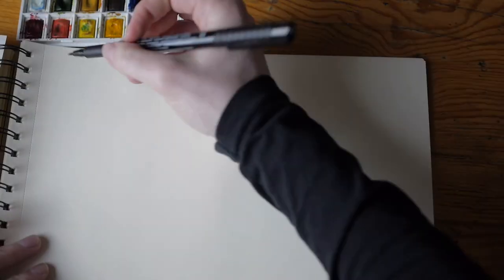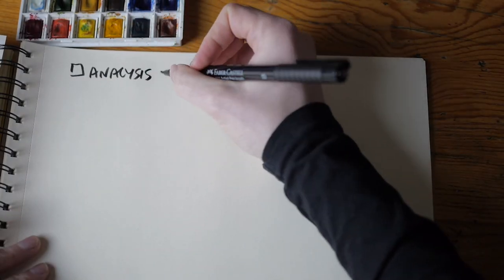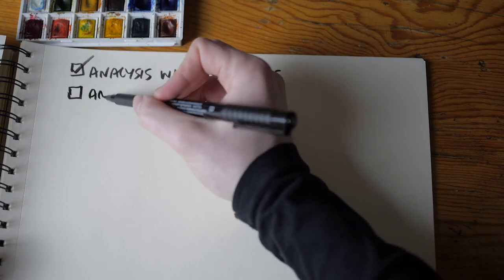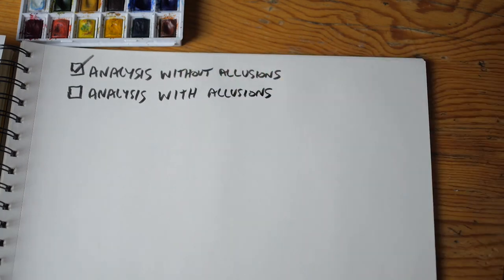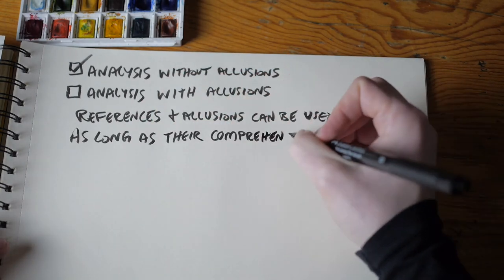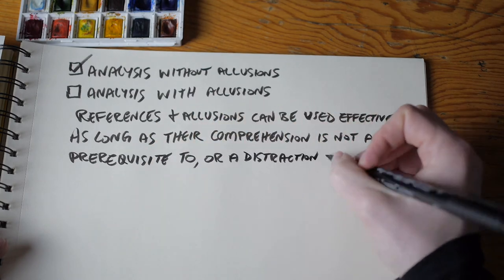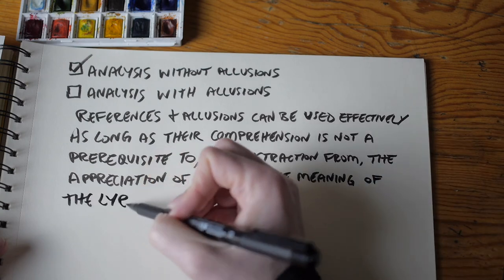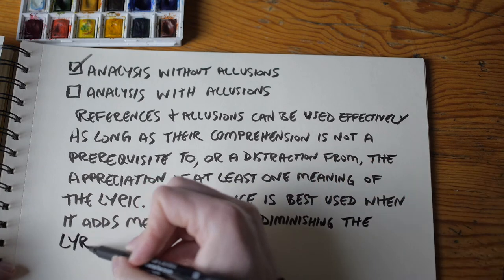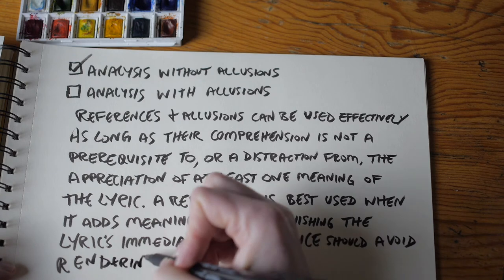I've just analyzed the images and action of this verse in isolation — that is, without taking into account the references and allusions Cohen makes to the Hebrew Bible. As we can see, this verse is amazingly powerful by itself. To be moved by the verse, it's not necessary to understand the allusions contained within it. The principle of songwriting that can be stated here is that references and allusions can be used effectively as long as their comprehension is not a prerequisite to, or a distraction from, the appreciation of the lyric. A reference is best used when it adds meaning without diminishing the lyric's immediacy, and should avoid rendering the lyric unintelligible.